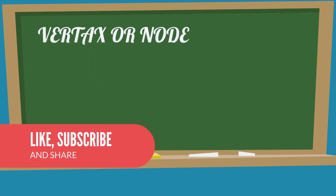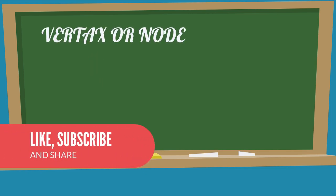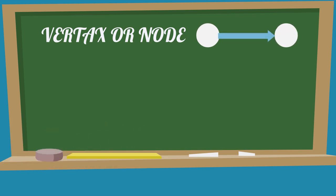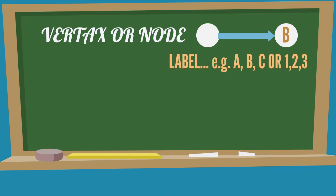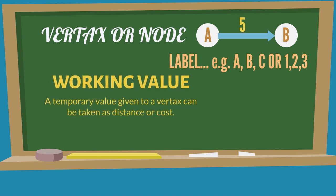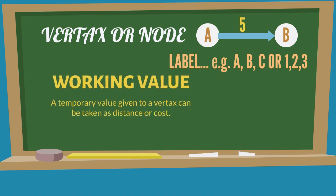The first terminology is the vertex or node. On the graph, the number of points which are connected through lines is called vertices or nodes. Every vertex or node is given a label — the label might be a letter, name, or number. The working value is a temporary value or distance between two points or vertices. The value which is finally calculated and finalized is called the final value.